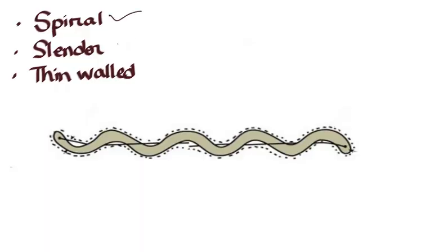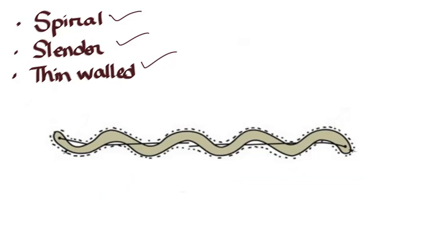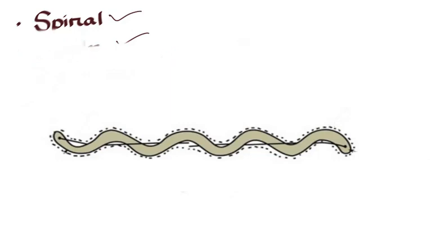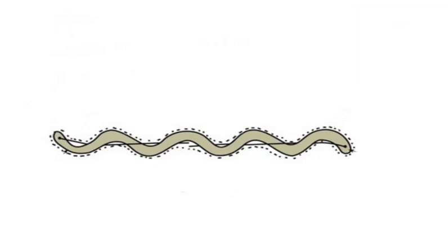They are spiral, slender and thin-walled bacteria. The length is about 5 to 15 micrometers and breadth is about 0.2 micrometers. To give you some context about the size of Treponema pallidum, the average diameter of a red blood cell is 6 to 8 micrometers. The spiral coils are regularly spaced at a distance of 1 micrometer from one another.